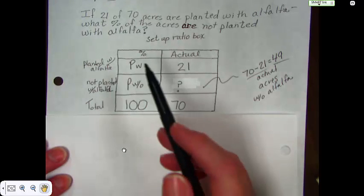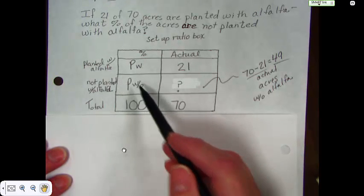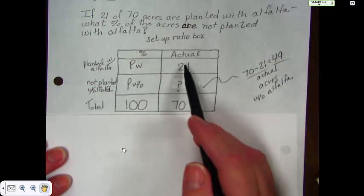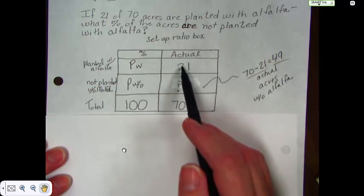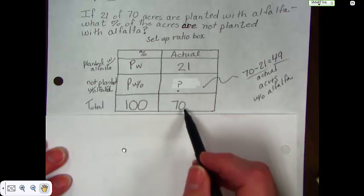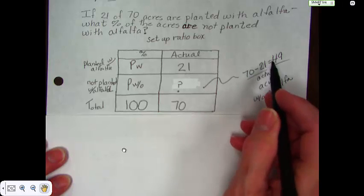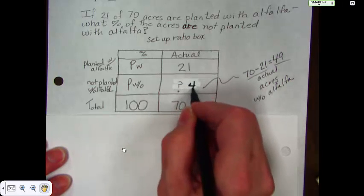Okay, you have planted with, planted without. You know the total of them added together is 100%. You know 21 acres are planted with alfalfa out of 70 acres. Well, this is an easy one. We can take 70 minus 21 and we hit 49 for here.